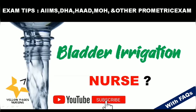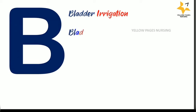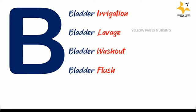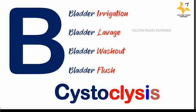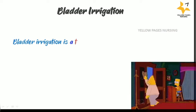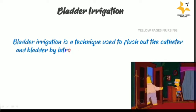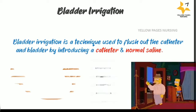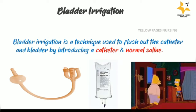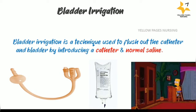Bladder irrigation — also called bladder lavage, bladder washout, bladder flush, or cystoclysis — is a technique used to flush out the catheter and bladder by introducing a catheter and normal saline.